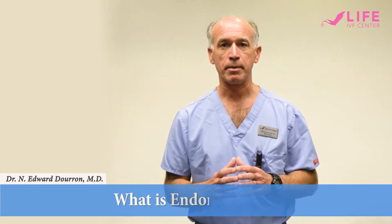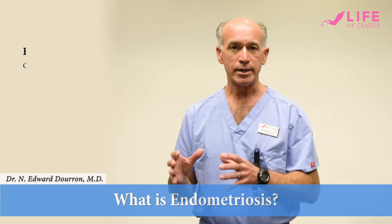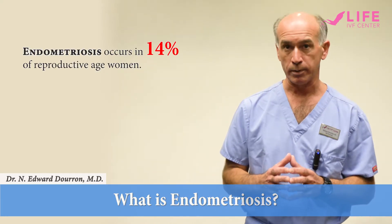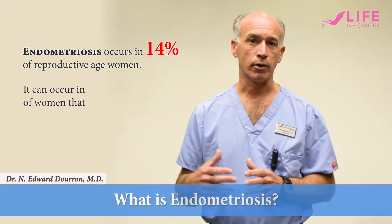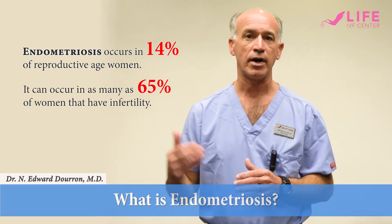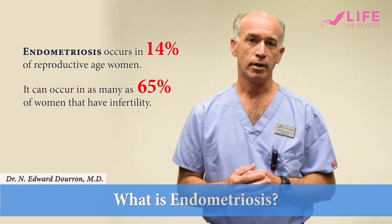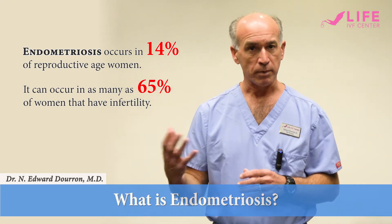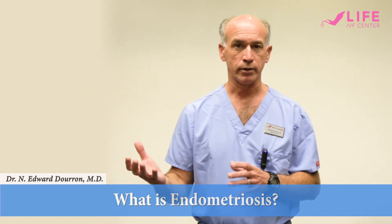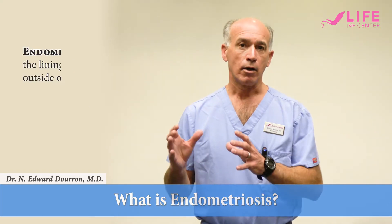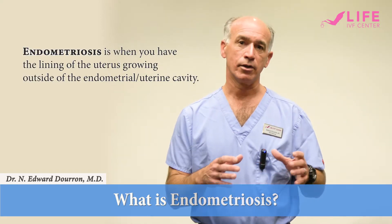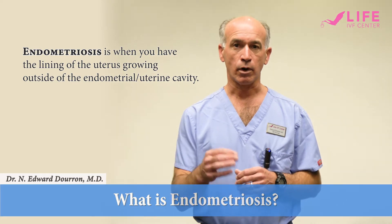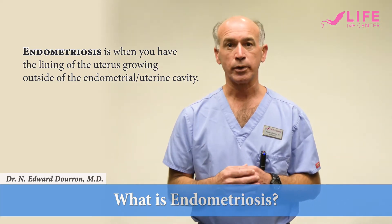First, we're going to talk a little bit about endometriosis. Endometriosis occurs in 14% of reproductive age women, but it can occur in as many as 65% of women that have infertility, so it is much more prevalent in the infertility community. Endometriosis is when you have the lining of the uterus growing outside of the uterine cavity.